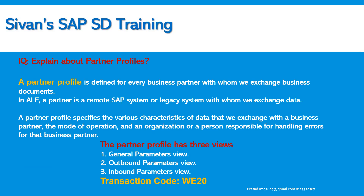Explain about partner profiles — this is the most important interview question you will often face. A partner profile is defined for every business partner with whom we exchange business documents. In ALE, a partner is a remote SAP system or legacy system. A partner profile specifies the characteristics of data exchanged, the mode of operation, and the person responsible for handling errors. The partner profile has three views: general parameters, outbound parameters, and inbound parameters — where we maintain inbound or outbound process codes. We use transaction code WE20 to create or define partner profiles.